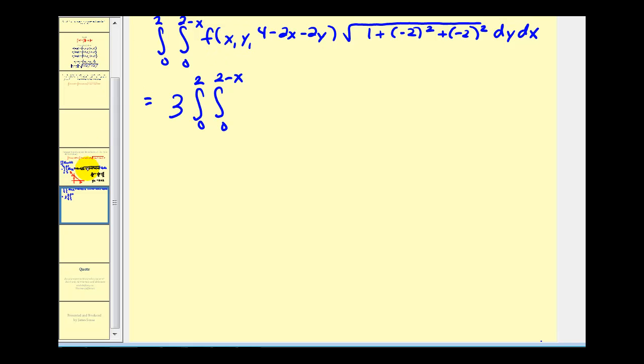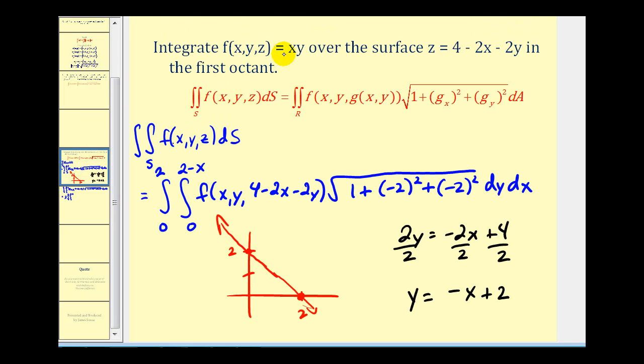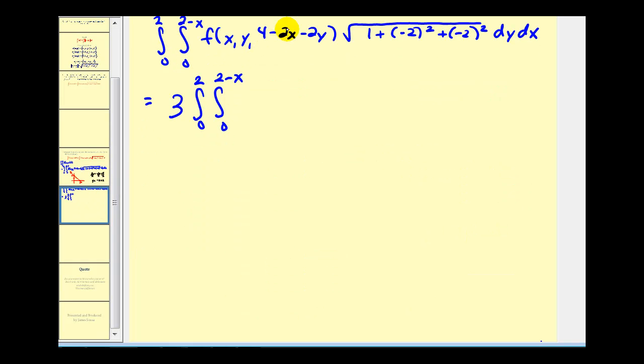Now let's go back and look at our function f. f(x, y, z) equals xy. For this problem, we don't even need the z coordinate. So we have 3 times the double integral of xy dy dx.